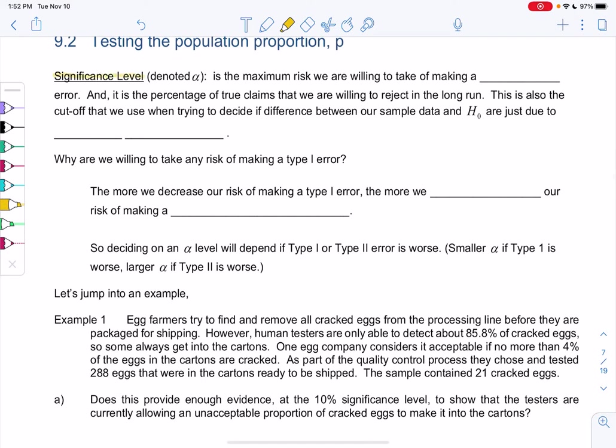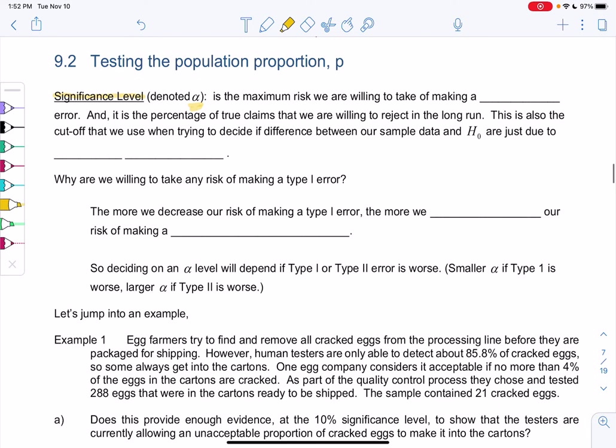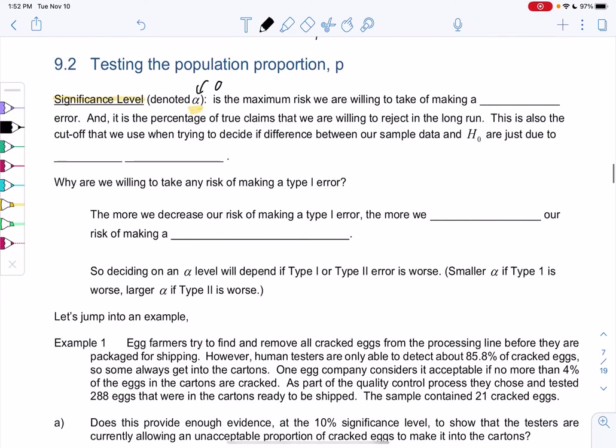The significance level, which sometimes we call alpha, that little fish-like letter, is the maximum risk we're willing to take of making a type 1 error. It's the percentage of true claims that we are willing to reject in the long run. Just like confidence intervals, if alpha is 0.05, we might reject 5% of the time when we shouldn't have.